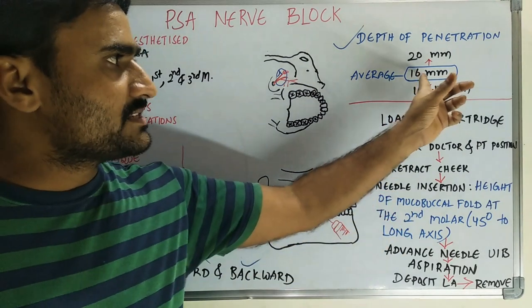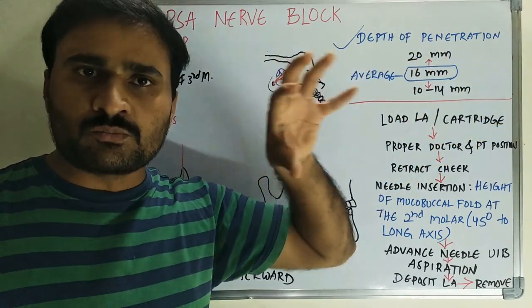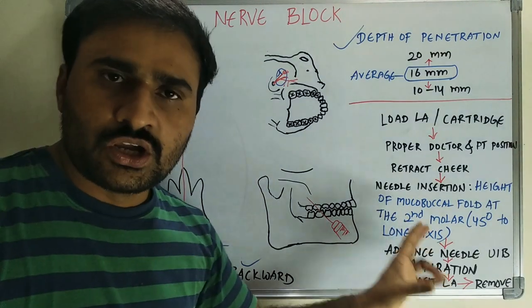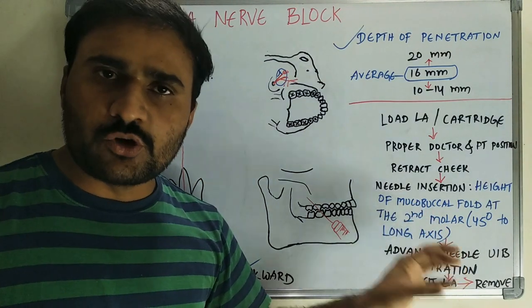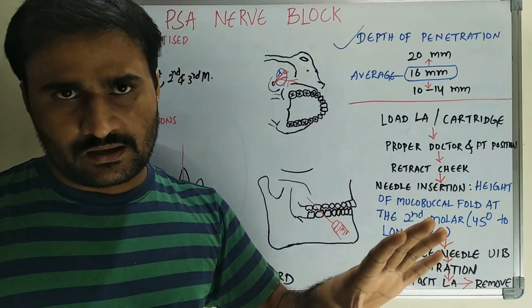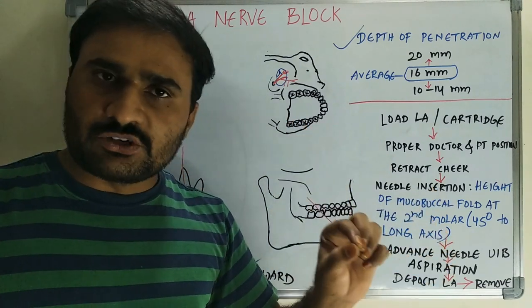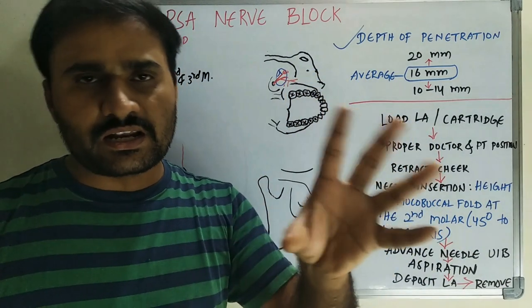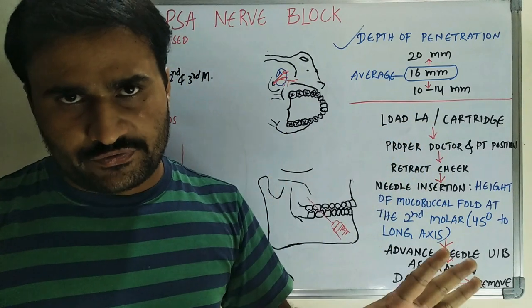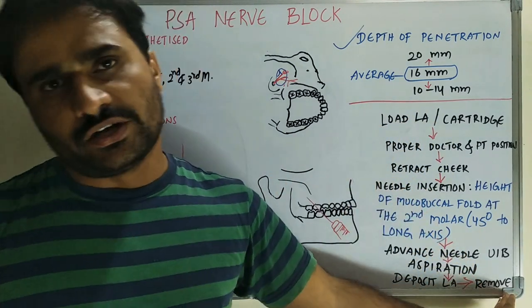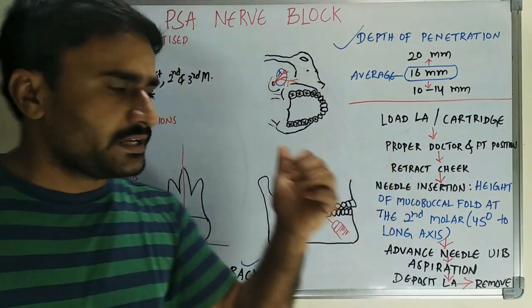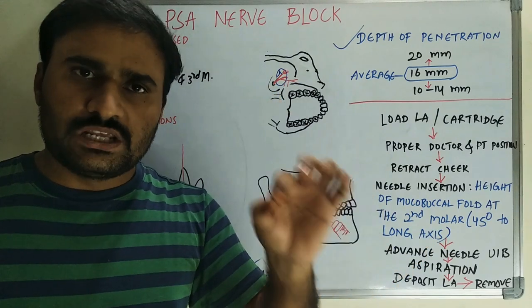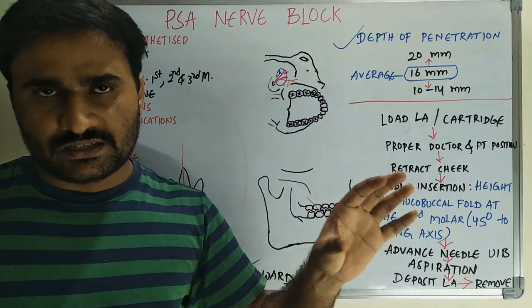In this direction, advance the needle to 16 mm — not more than that; it depends on the patient's skull size. Once the needle is in the proper position, aspirate in two planes. If you get a negative aspiration, deposit the local anesthetic solution — 0.9 to 1.8 ml, generally 1.5 ml is enough. After deposition, remove the syringe and wait three to five minutes. There are no subjective symptoms; you can confirm the PSA nerve block objectively by the absence of pain during the procedure.